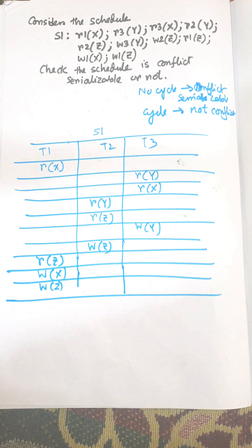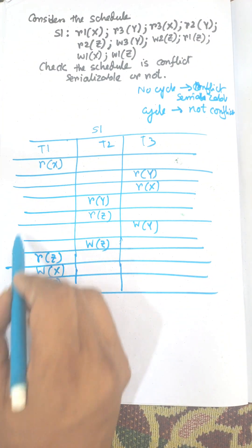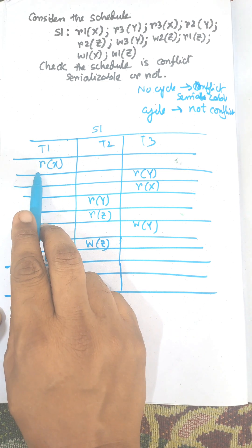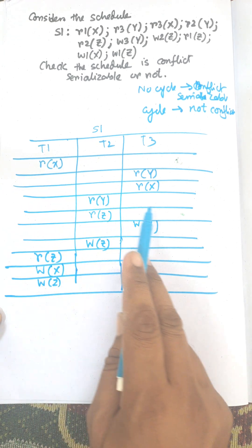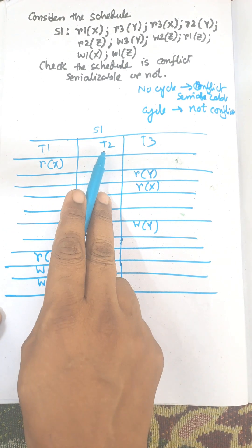Now we need to draw the precedence graph. First of all we need to draw these are the transactions T1, T2, T3. And the T1 transaction reads X. And we need to check the operation of write here. There is no operation of write by either T2 or T3. Next,